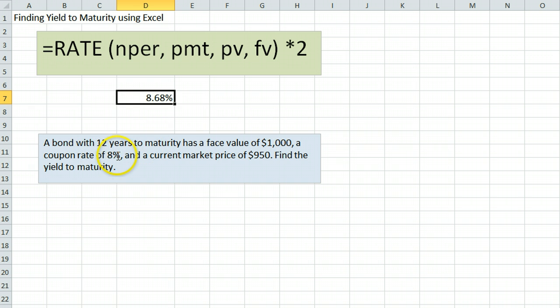Our coupon rate is 8%, but yield to maturity accounts for the gain or loss you make on the bond as a result of buying the bond at a price different than its face value. Here we're paying $950 for a bond with a face value of $1,000, so that's adding to the yield that we end up getting on the bond a little bit. That's how we end up with the yield to maturity a little bit higher than the coupon rate.